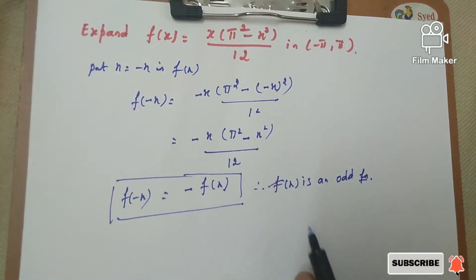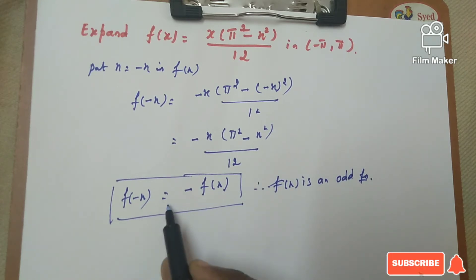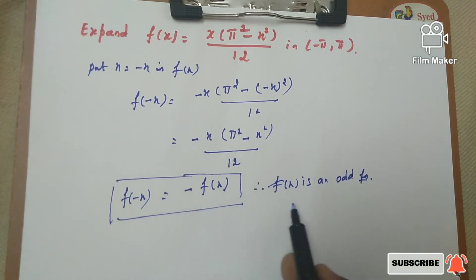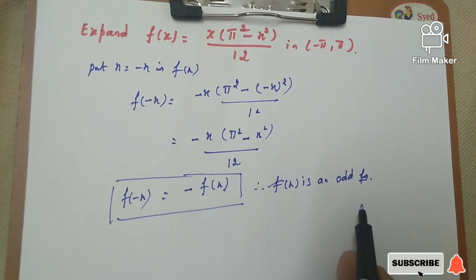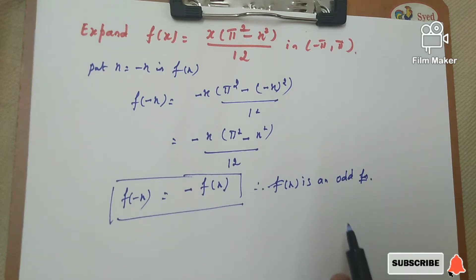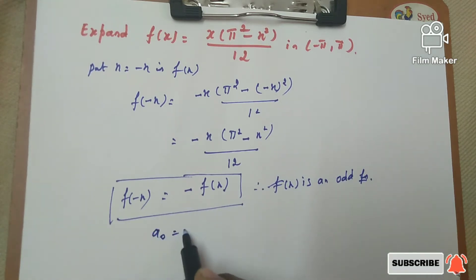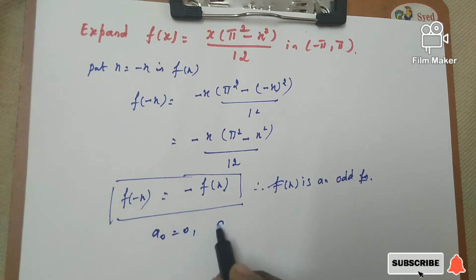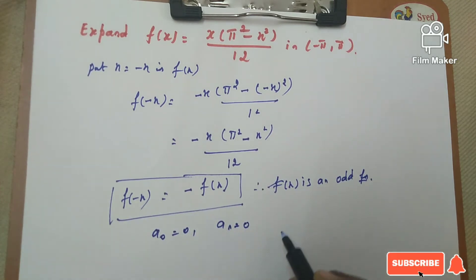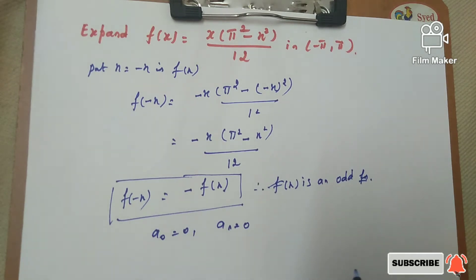Therefore, f(x) is an odd function, since f(-x) = -f(x). As we discussed already, for an odd function, a₀ = 0 and aₙ = 0. So only we need to find the value for bₙ.